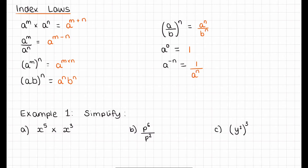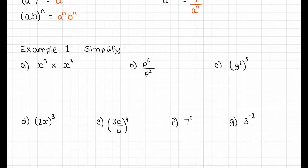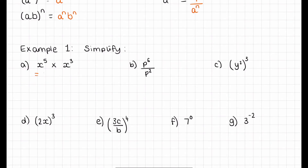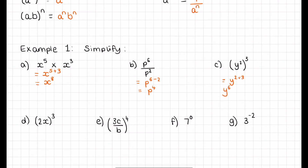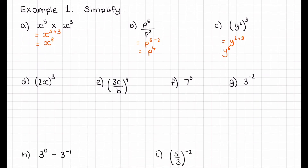Now a few examples so you can see the different rules working. Example A: X to the power of 5 times X to the power of 3 — using the first law, that's X to the power of 5 plus 3, which is X to the power of 8. Example B: P to the power of 6 over P to the power of 2 — using the division law, we subtract the powers, giving P to the power of 6 minus 2, which is P to the power of 4. Example C: using the power-of-a-power rule, we multiply: Y to the power of 2 times 3, which is Y to the power of 6. Example D: 2X all to the power of 3 — everything has the power of 3 applied, giving 2 to the power of 3 times X to the power of 3, which is 8X to the power of 3.